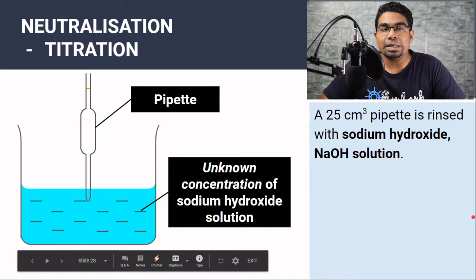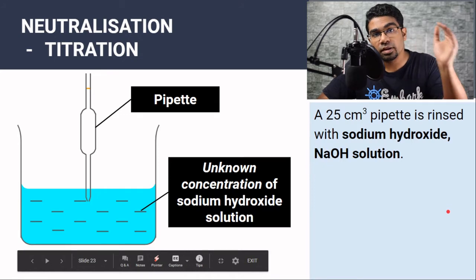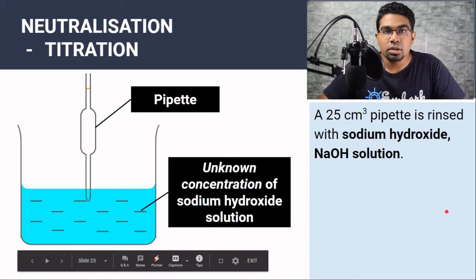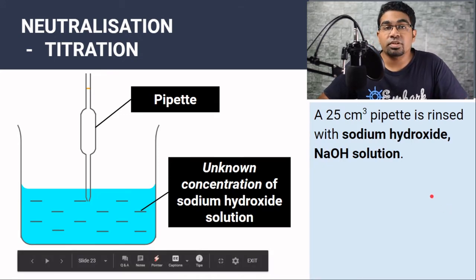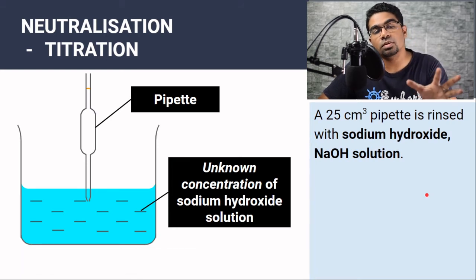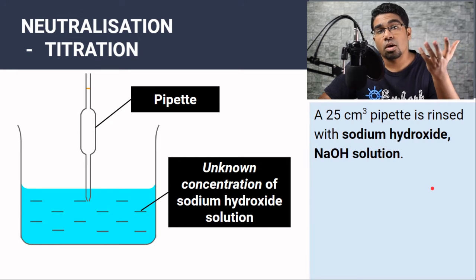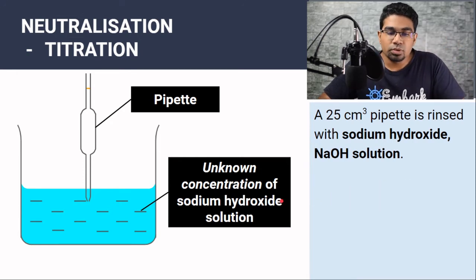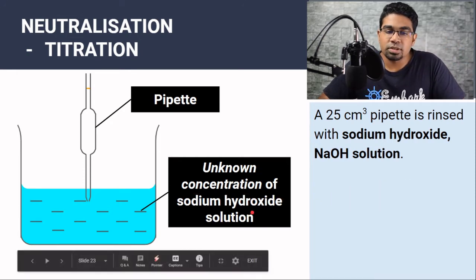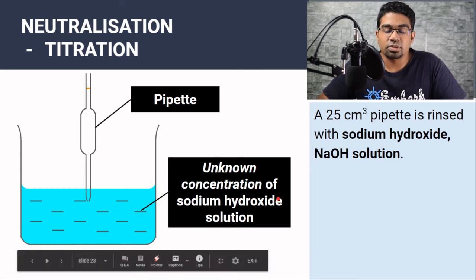Titration is a method to carry out neutralization. Neutralization is the reaction between acid and base; titration is the experimental procedure to carry out this reaction. Titration can be used for several reasons. In this case, we are going to use titration to find out the concentration of an alkali — specifically sodium hydroxide solution of unknown concentration.